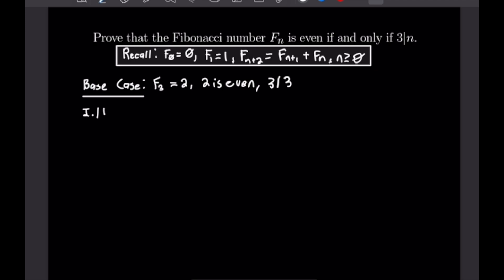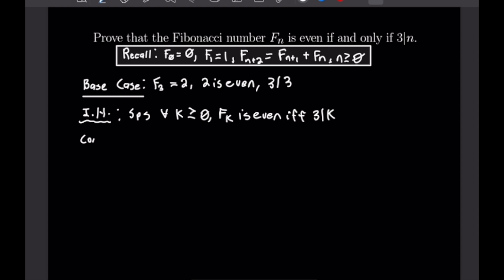We'll write out our induction hypothesis next. We're going to suppose that for all K ≥ 0, F(K) is even if and only if 3 divides K — abbreviated IFF. Now we want to consider our K+3 case, because that would be the next multiple of 3, with F(K) being even.